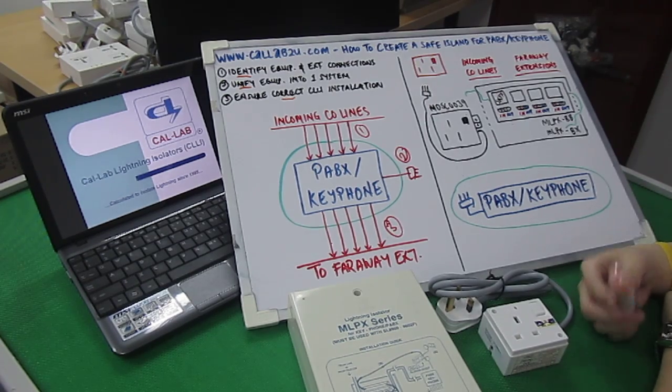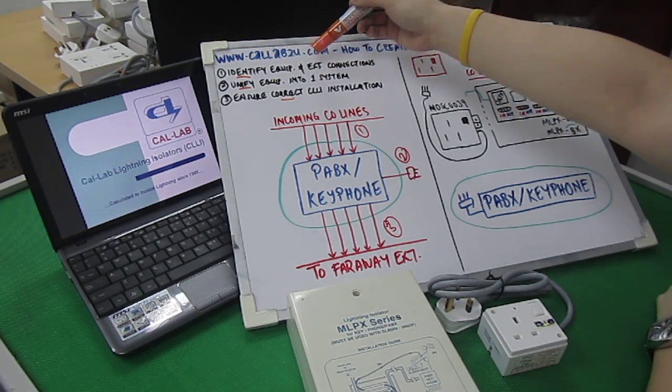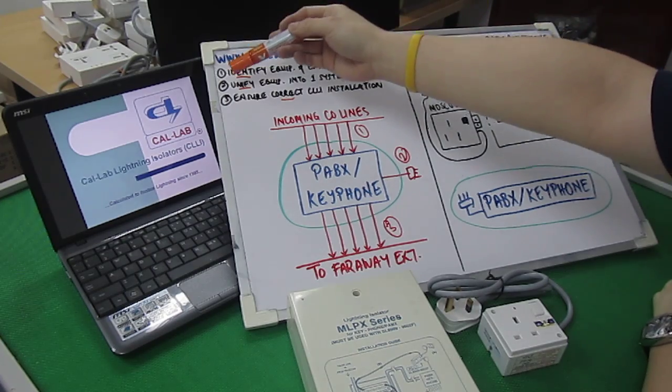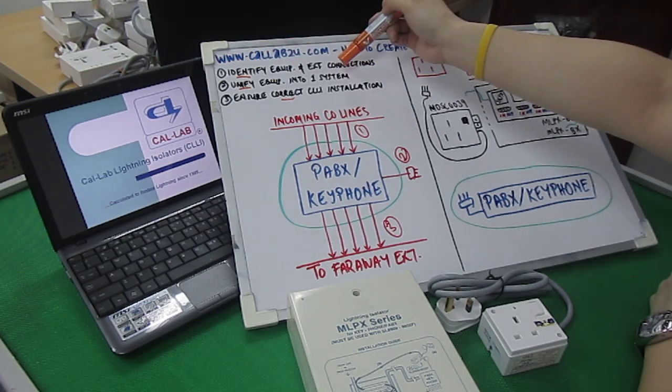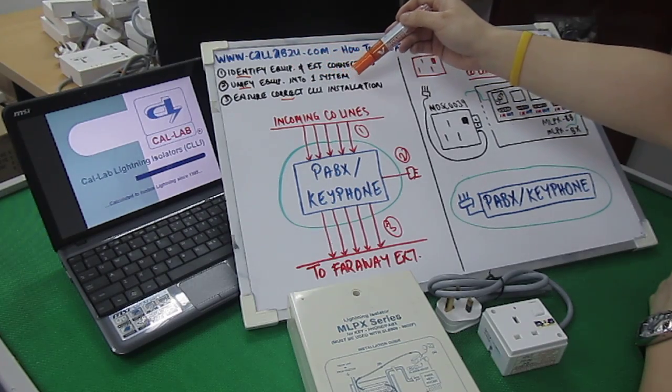Again, as in previous segments, we're going to go through the same three-step process very quickly. The first step is to identify the equipment you want to protect as well as the external connections. The second step is to unify the equipment into a single system. And the third step is to ensure correct CLLI or correct CalLab Lightning Isolator installation.